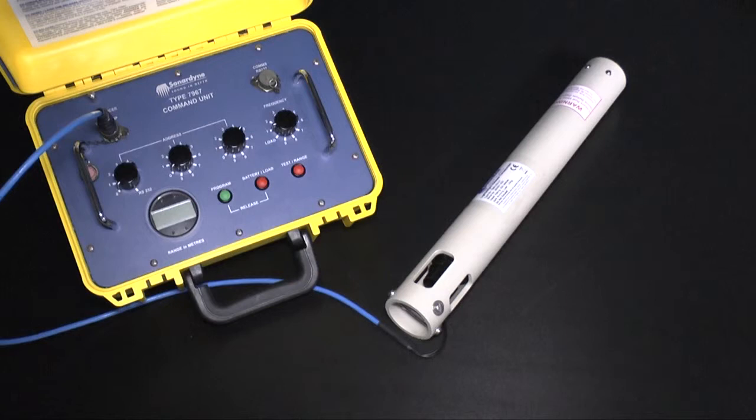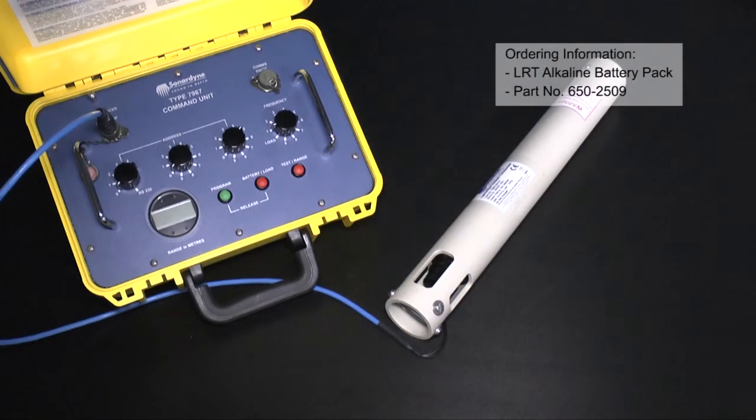If your unit isn't fitted with an alkaline battery, the voltage should be well above 11.25. If it isn't, then you'll need to replace your battery before deploying the LRT. This procedure is explained in the manual and in one of our other how-to videos.